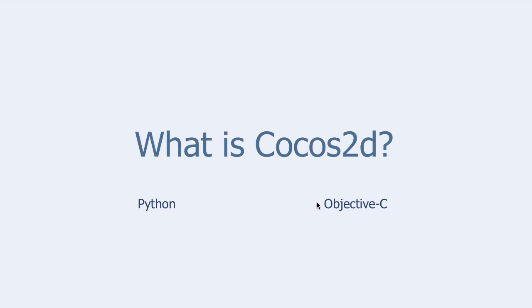Cocos2D is a framework — a library of objects and methods for making games. As you know, games require fast graphics. The best way to understand Cocos2D is to look at the history of games and computer graphics.